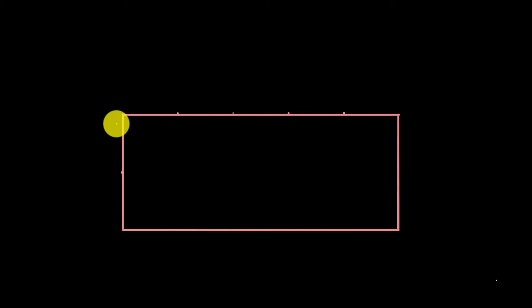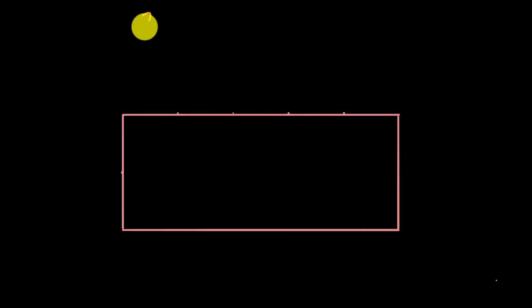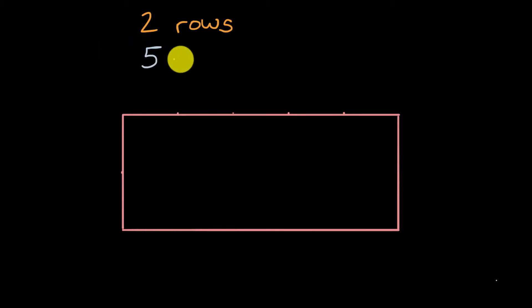I have a rectangle drawn right over here. My goal is to split this rectangle up into smaller equal squares. The way that I'm going to do that is by first dividing this rectangle into two equal rows, and then I'm going to divide this rectangle into five equal columns.